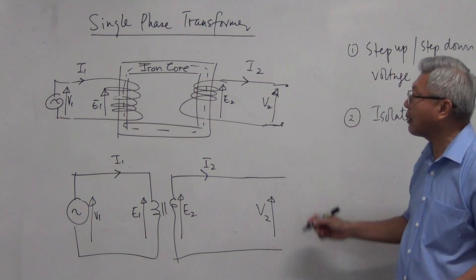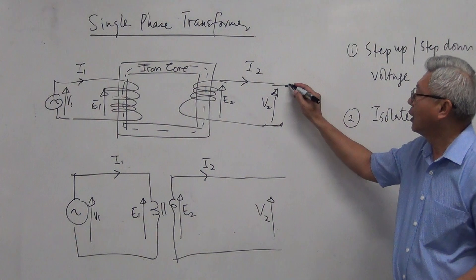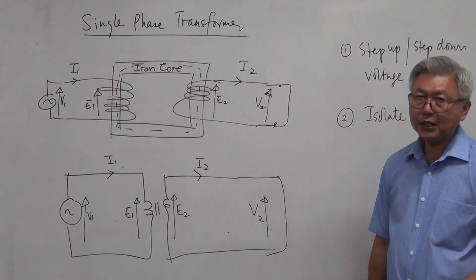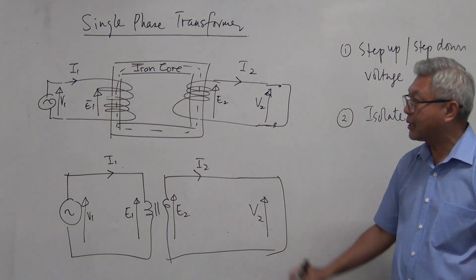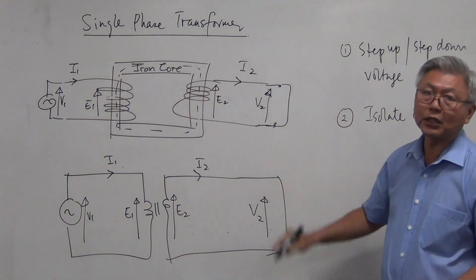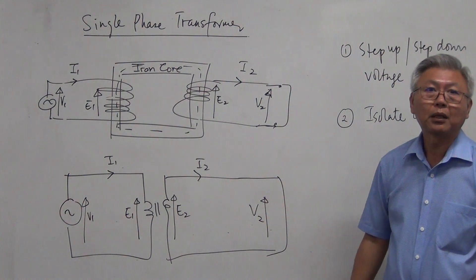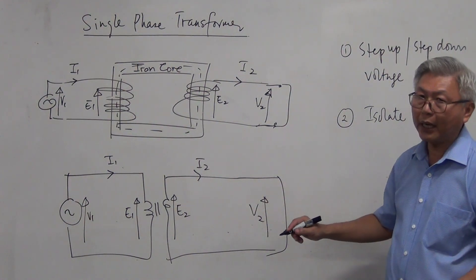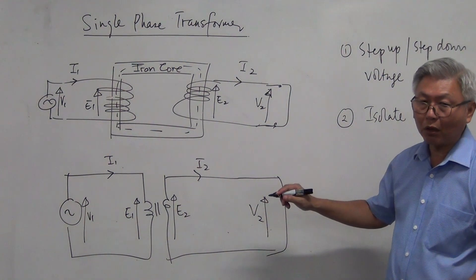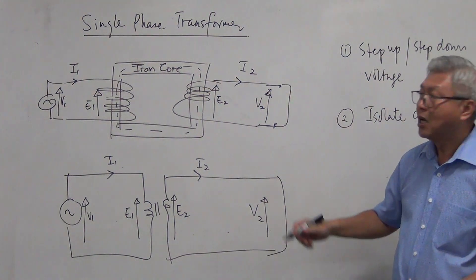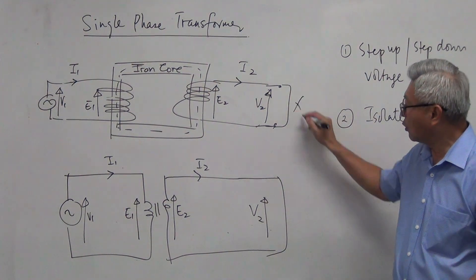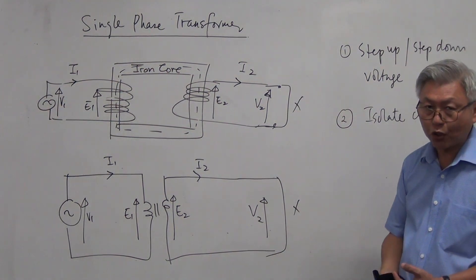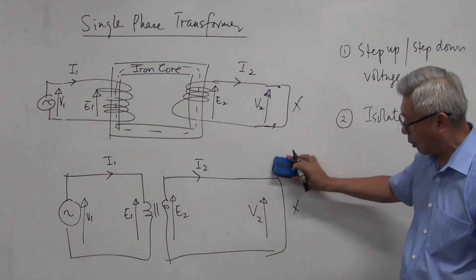There is something wrong if you draw it short-circuited. Because if you short-circuit your transformer — just like you put a wire across a battery — you are short-circuiting it. So you never short-circuit your transformer. You can draw it with a load or without a load; both are perfectly fine.